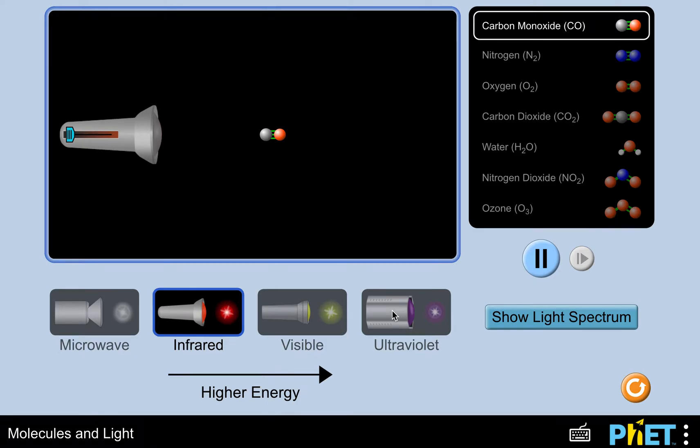This is the PhET molecules and light simulation and we're going to answer a couple of questions for the Physics in Everyday Life course. What happens when photons or really small particles of electromagnetic radiation pass through molecules and does the same thing always happen?